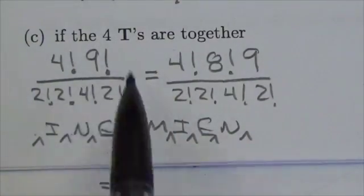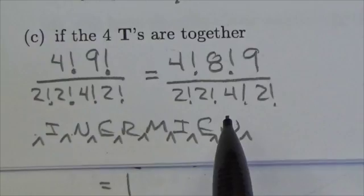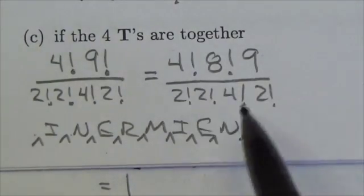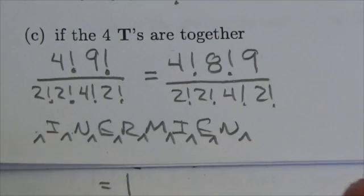So that's why you can see it like this or like this. And again, if you chose not to include the 4! in the numerator and denominator just because you're treating the T's as one letter, that's fine too.